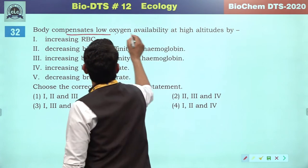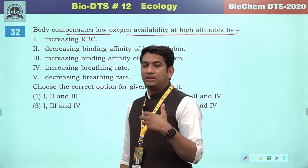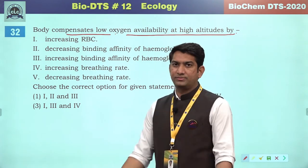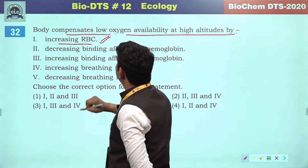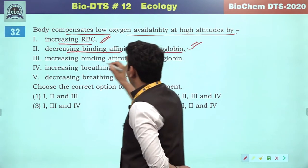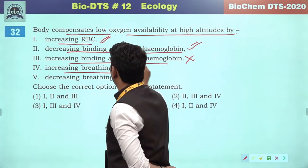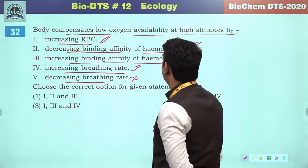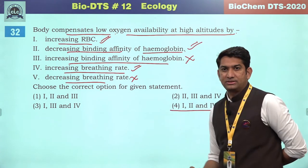The body compensates for low oxygen availability at high altitude. Due to homeostatic regulation, the body will increase RBC count, decrease the binding affinity of hemoglobin, and increase the breathing rate. Decreasing breathing rate is not correct. So we can go for the first, second and fourth options — fourth will be the correct answer.